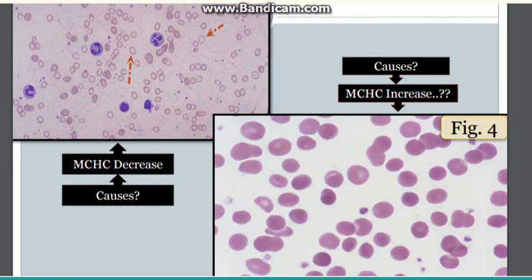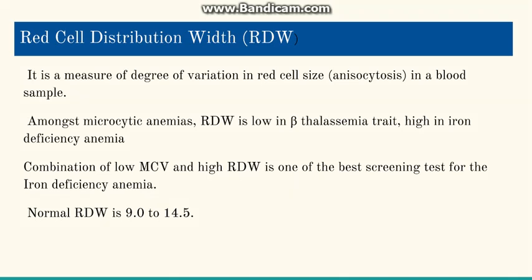Going to the last RBC index, that is red cell distribution width (RDW). It is used to measure the degree of variation in red cell size, i.e. anisocytosis, in a blood sample. To differentiate beta thalassemia trait from iron deficiency anemia: RDW is low in beta thalassemia trait and higher in iron deficiency anemia, because in iron deficiency anemia the red cells have a variety of sizes. The combination of a low MCV and a high RDW is the best screening for iron deficiency anemia, as it can rule out causes like beta thalassemia trait. The normal RDW ranges from 9 to 14.5.